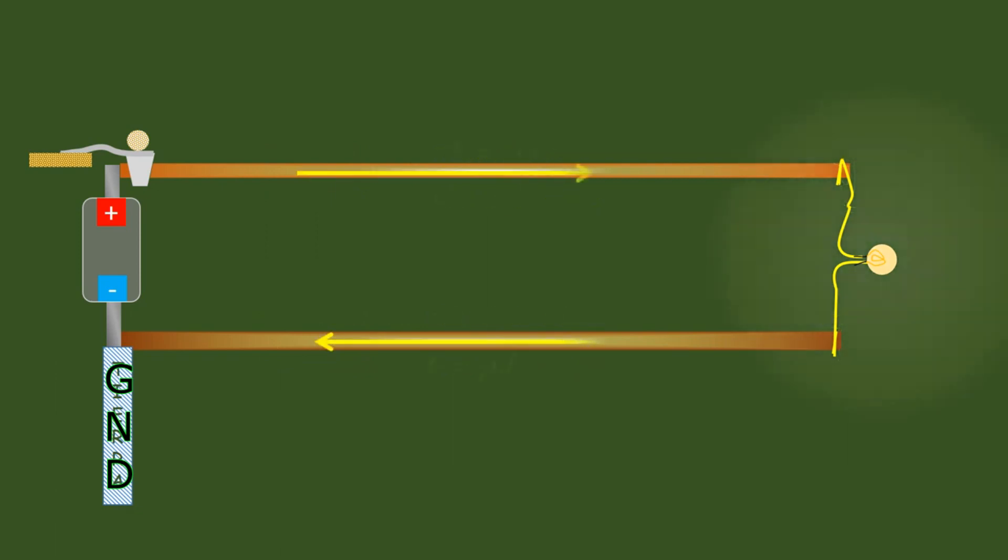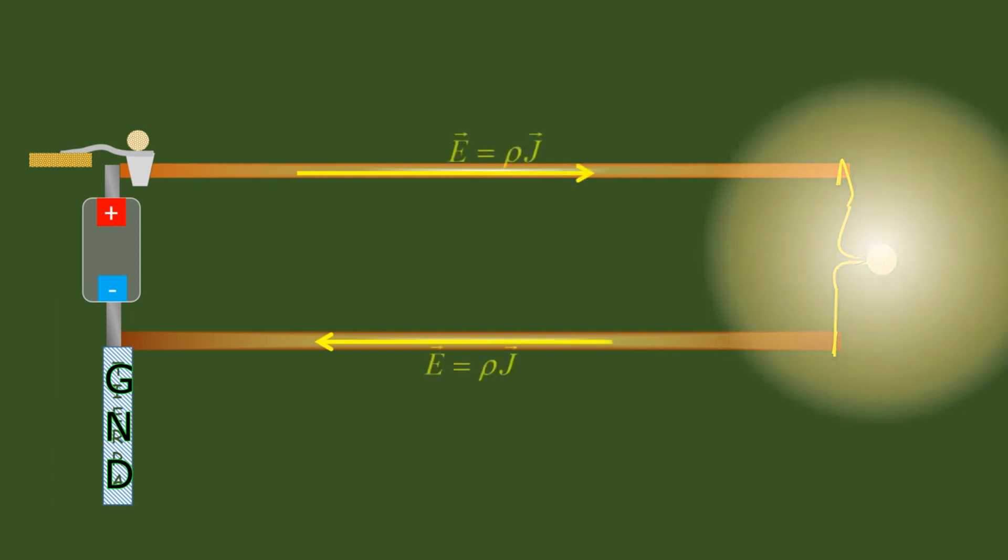Once potentials and current are stabilized, this wave disappears, so it is not the one that transports the energy that reaches the load in a steady state.